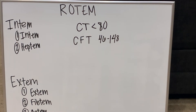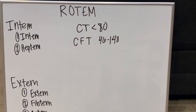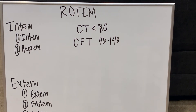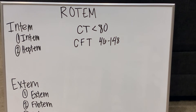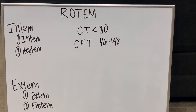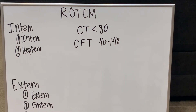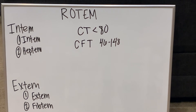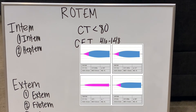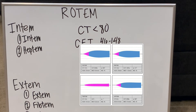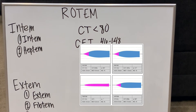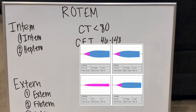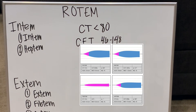The next measurement is clot formation time. A normal clot formation time is between 46 and 148 seconds. The nice thing with ROTEM is that on the paper printout, all abnormal numbers will be in red — which helps you focus on the key values. For this patient, both Extem and Intem are well above that range, which tells us we need either platelets or cryo.